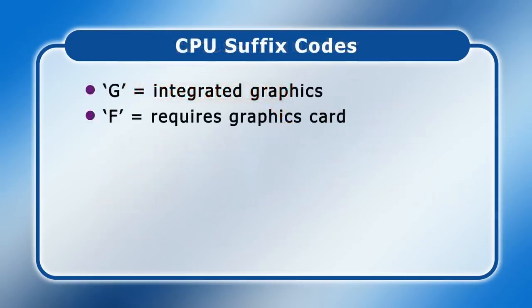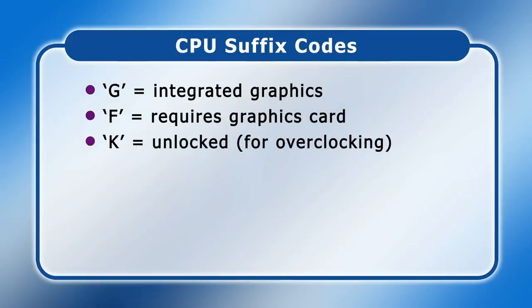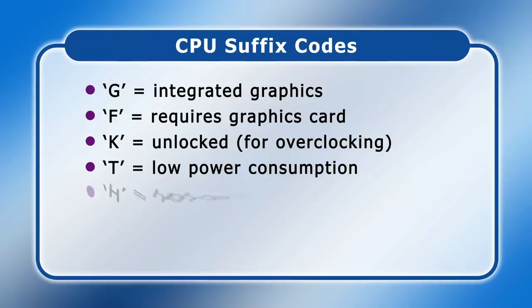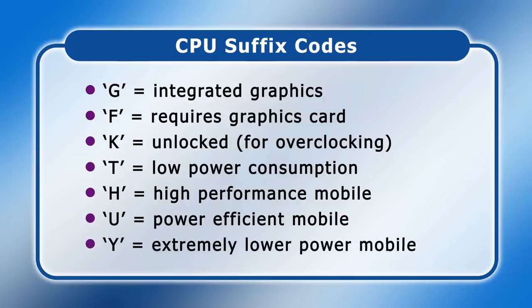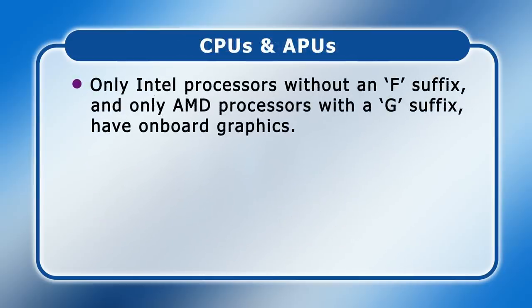Other suffix letters include K, which for an Intel CPU indicates that a processor's frequency is unlocked so it can be overclocked; T which indicates a low power consumption chip; H which indicates a high performance mobile chip; U for a power efficient mobile chip; and Y for an extremely low power mobile chip. Neither Intel nor AMD use an entirely consistent name and number system across their entire range, with, for example, Intel Pentium CPUs not having suffix letters. For processors that do carry them, it's really important to stress that only Intel processors without an F suffix, and only AMD processors with a G suffix, have onboard graphics. Today this includes most consumer Intel CPUs, but by no means all AMD chips.